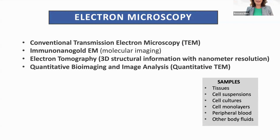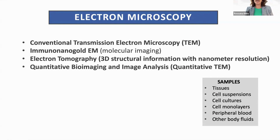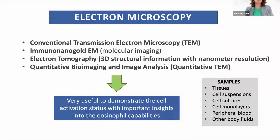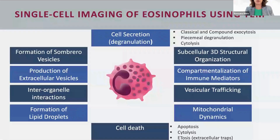I like to say that specific granules and sombrero vesicles give personality to human eosinophils. Sombrero vesicles show high plasticity and have an incredible ability to interact with and bud from secretory granules, because they are involved in the transport of immune mediators. For over 20 years, our group has been applying EM techniques to understand the architecture and functions of eosinophils in humans and mouse models, especially during cell activation — using conventional TEM, immunogold EM, electron tomography, and quantitative approaches that together demonstrate the cell activation status with important insights into eosinophil capabilities.